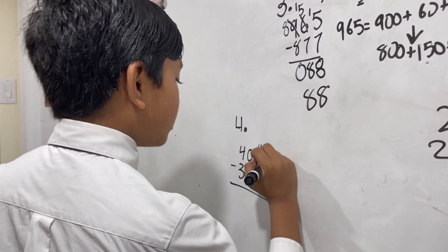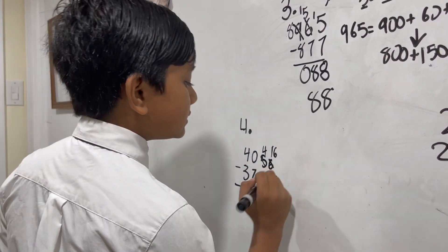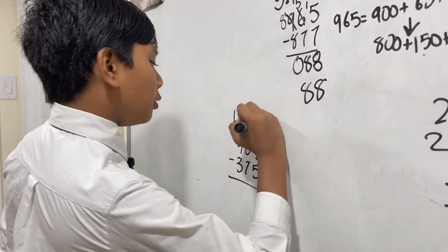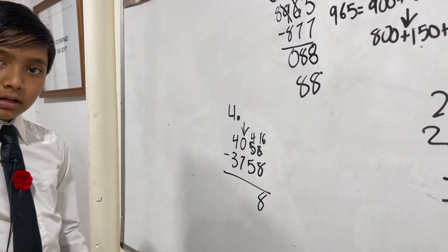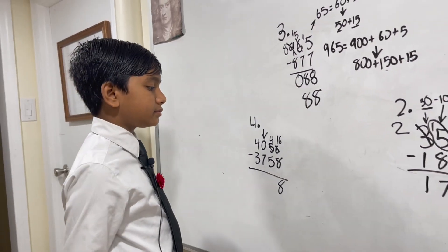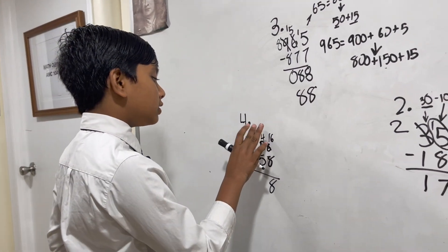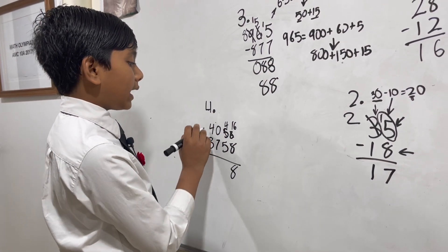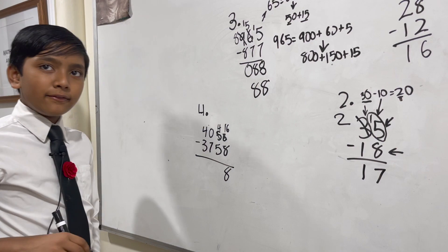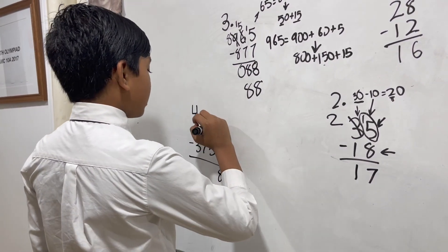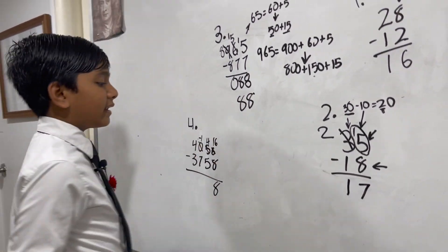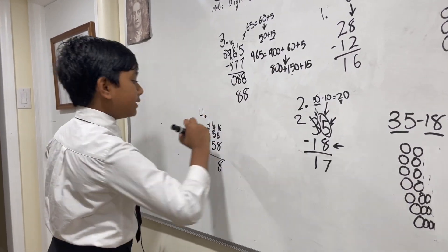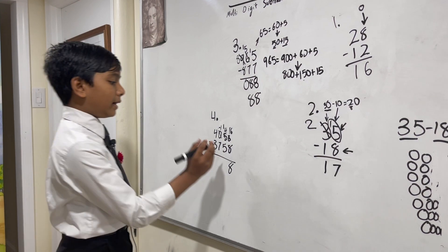So 6 minus 8 doesn't work, so you know the deal by now. This 50 becomes a 40, this 6 gets the extra 10. 16 minus 8 is 8. But now we come to a problem: how can you borrow from a zero if the zero represents nothing? Well, there are two ways to do this trick. Number one is borrowing from this 40 as a whole, making it 39. But the other one I feel is a little more clever. We're going to take this and make it negative one. So now this becomes 14. 14 minus 5 is 9.